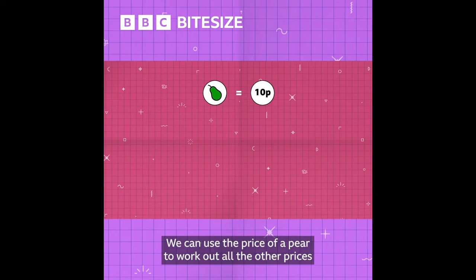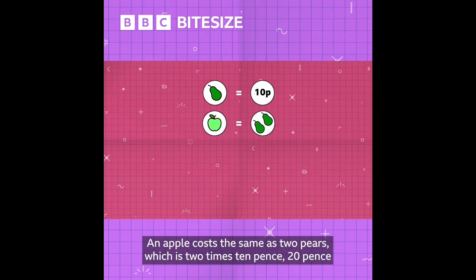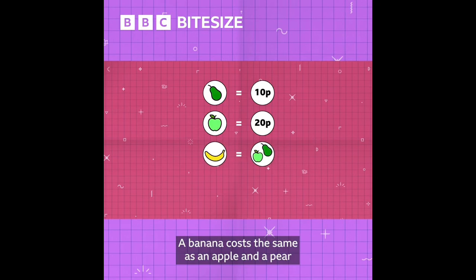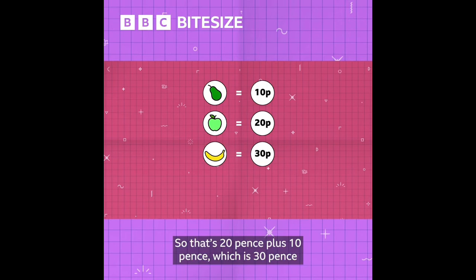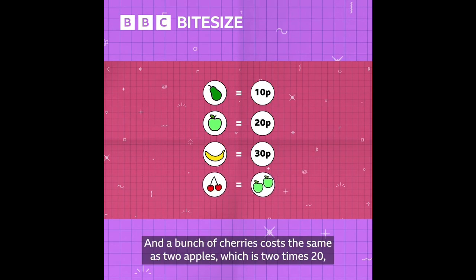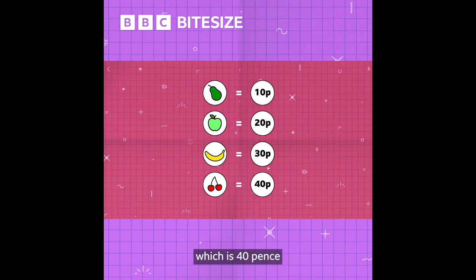We can use the price of a pear to work out all the other prices. An apple costs the same as two pears, which is two times 10 pence — 20 pence. A banana costs the same as an apple and a pear, so that's 20 pence plus 10 pence, which is 30 pence. And a bunch of cherries costs the same as two apples, which is two times 20, which is 40 pence.